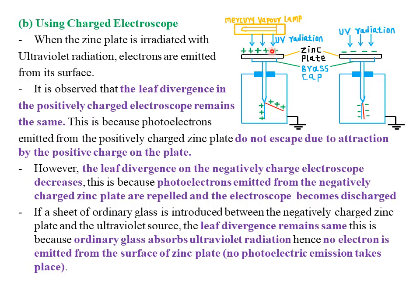The positively charged zinc plate attracts the photoelectrons that have been produced, so those electrons are not ejected away from the zinc plate — they are retained. Therefore the electroscope does not lose any electrons. The divergence of the leaf remains the same because divergence only reduces if the electroscope is losing charges. The positive charges prevent the ejected photoelectrons from escaping, so the attraction retains those electrons and the leaf divergence remains unchanged.